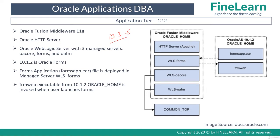In Fusion Middleware there are two important components: one is the HTTP server, which is based on Apache, and there is the E-Business Suite WebLogic domain. The EBS WebLogic domain contains an admin server and three managed servers, each responsible for serving related requests.